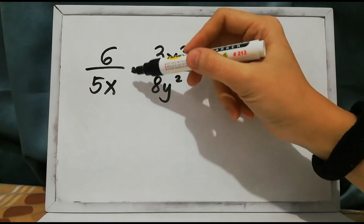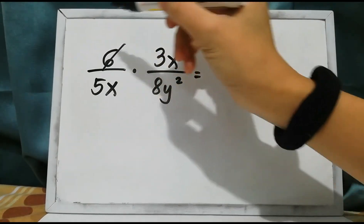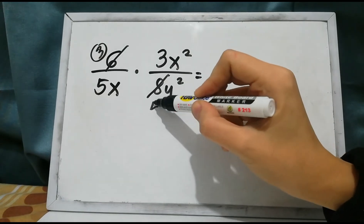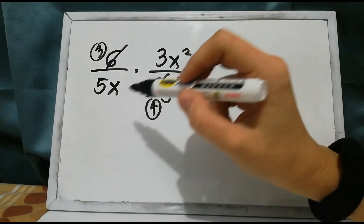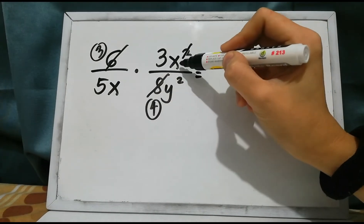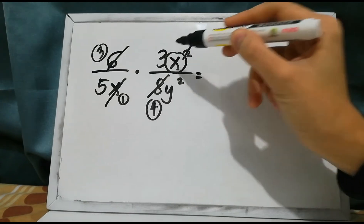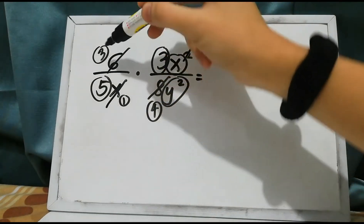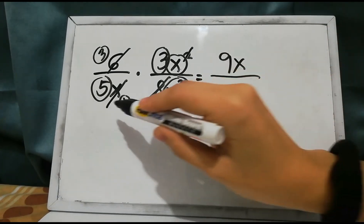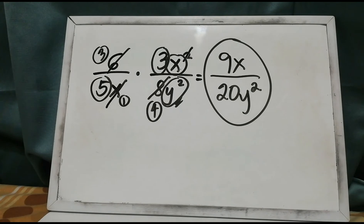For our practice, we have 6 over 5x times 3x squared over 8y squared. 6 and 8 have a common factor of 2: 6 divided by 2 is 3, and 8 divided by 2 is 4. We have x squared in the numerator and x in the denominator — the common factor is x: x squared divided by x is x, and x divided by x is 1. So there's no x remaining in the denominator, and no y in the numerator. Multiplying: 3 times 3 is 9, and x over 5 times 4 is 20y squared. The product is 9x over 20y squared. Did you get the same answer? I hope so.